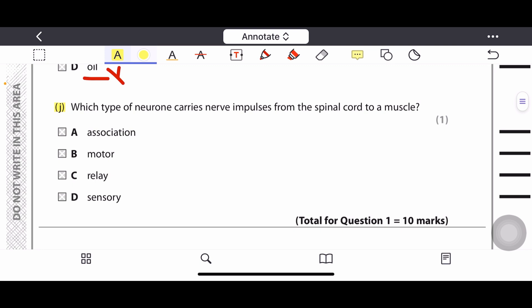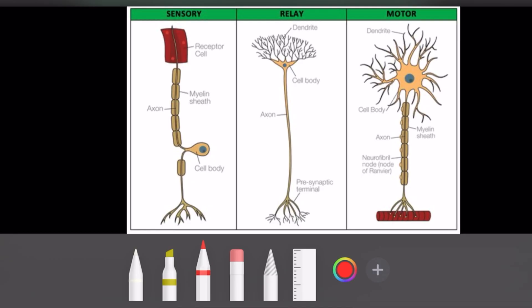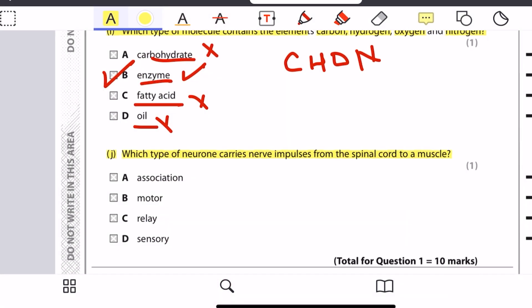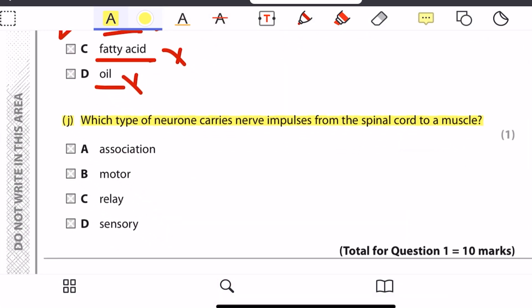Question J: Which type of neurons carry nerve impulses from spinal cord to muscle? Let us see the structure of neuron. In this picture we can see three different types of neurons: sensory neuron, relay neuron and motor neuron. The neuron that carries nerve impulses from central nervous system to muscle is motor neuron. So which type of neuron carries the nerve impulse from spinal cord to the muscle? It is motor neuron.